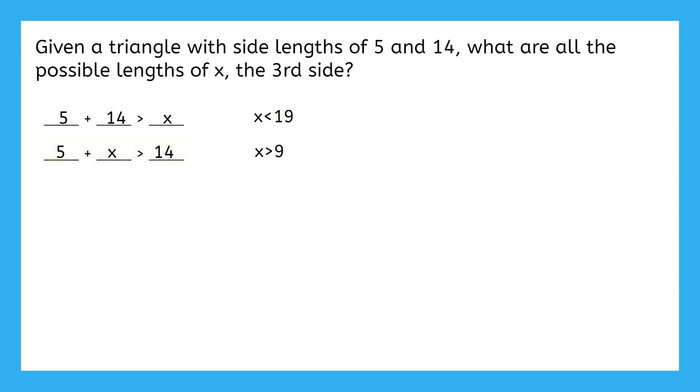Let's put those two statements together to write a single inequality showing everything x can be. We have that x is bigger than 9 but smaller than 19. Okay, so that may have seemed like a lot to take in. The goal was to give you some background information about why our answer turned out this way.